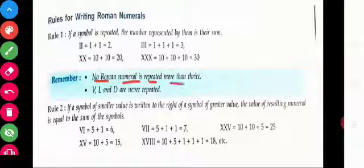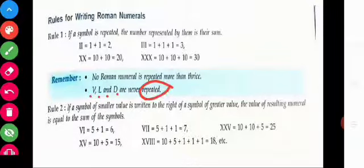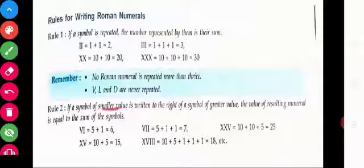Remember, no Roman numeral is repeated more than three times. The symbols V, L, and D are never repeated. Rule 2: If a symbol of smaller value is written to the right of a symbol of greater value, the value of the resulting numeral is equal to the sum of the symbols.